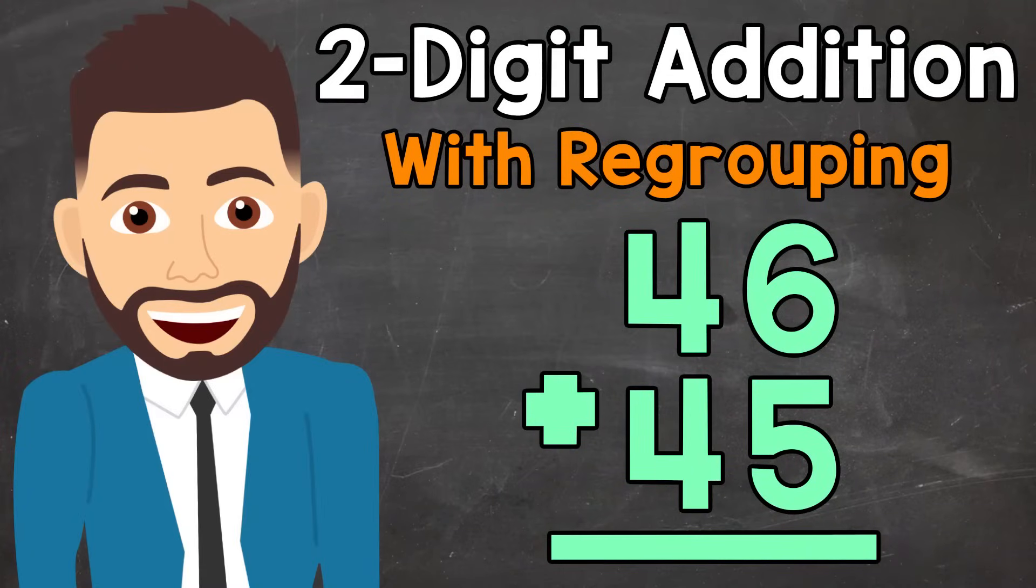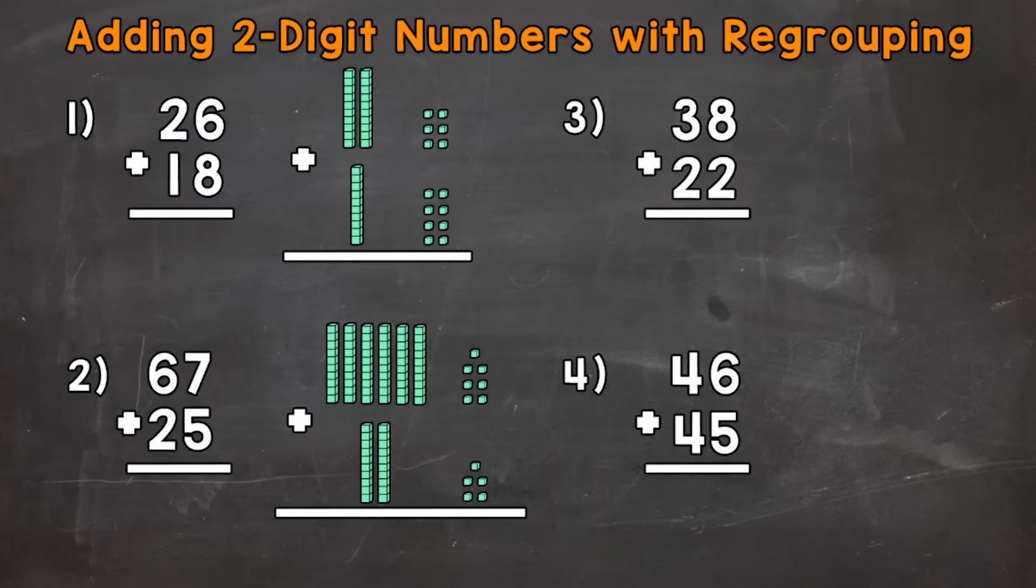Welcome to Math with Mr. J. In this video, I'm going to cover how to add two-digit numbers with regrouping. And we have four examples that we're going to go through together in order to get this down. Now, I do want to mention before we start that regrouping is also called carrying. So if you hear to regroup or to carry, they mean the same thing.